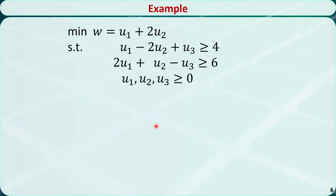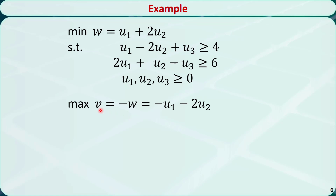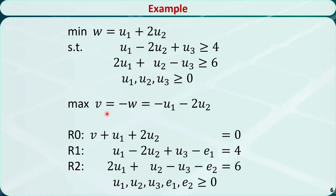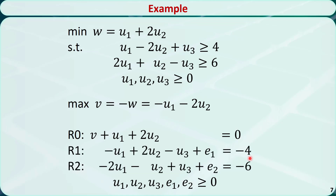Let's illustrate the dual simplex method using this example. This is a dual problem in the standard form — it's a minimization problem, all constraints are greater than or equal to the right-hand side, and all variables are greater than or equal to 0. The first step is to reformulate the dual problem. We change it to a maximization problem by taking the opposite of the objective function and assign it to v. We introduce two excess variables e1 and e2 to convert the constraints to equalities. Then we make the right-hand side non-positive by multiplying both sides by negative 1.